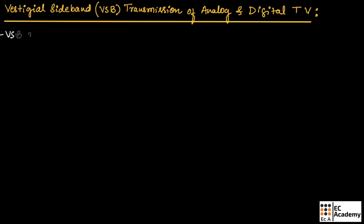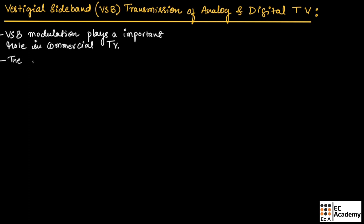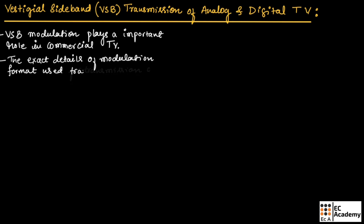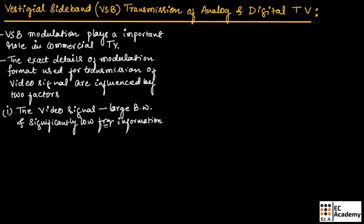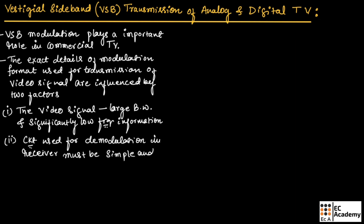The vestigial sideband modulation plays a very important role in commercial television. The exact details of modulation format used for transmission of video signals are influenced by two factors. First, the video signal exhibits large bandwidth and significantly low frequency signal. Second, the circuit used for demodulation in the receiver must be simple and inexpensive.